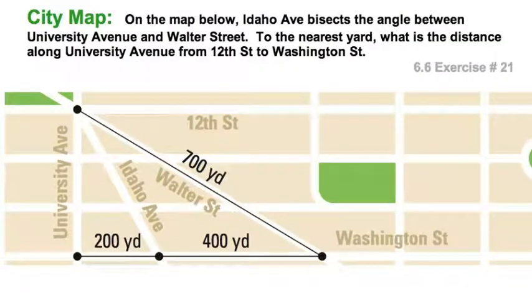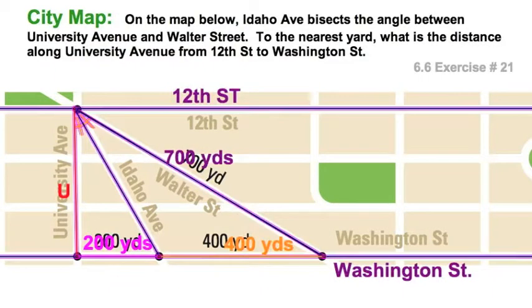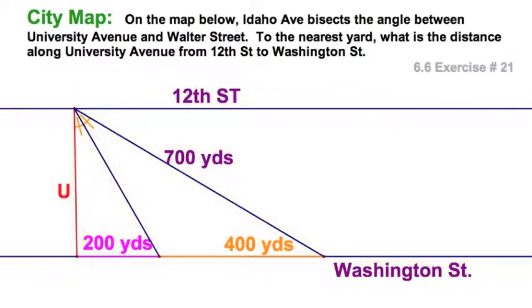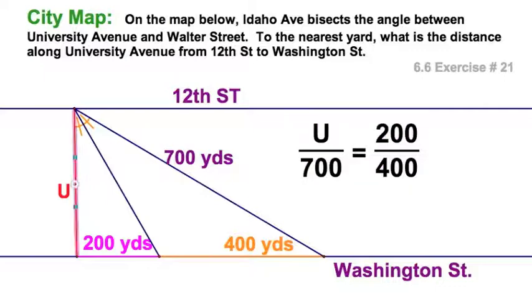Well let's find the length of University Ave here. And I'm going to replace the drawing with one that looks a little more, well a little less map, a little more geometry. So I've got this angle bisector here. And I want this section of University that's between 12th and Washington. Well pretty straightforward. University is to 700 as 200 is to 400. Easy. Well that's one half. So what's half of 700 everyone? 300 yards.